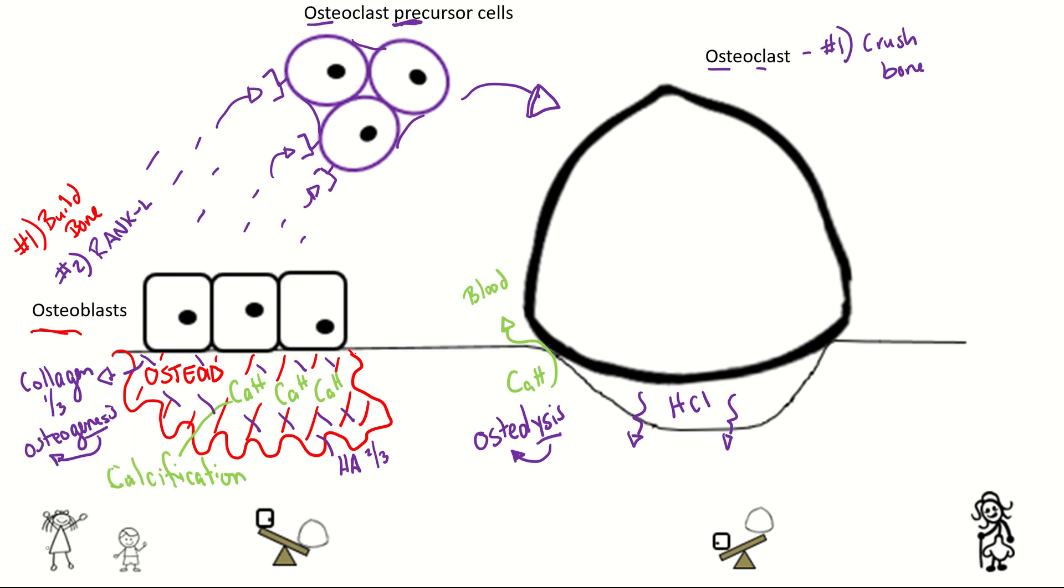But one thing that's interesting is why in the world would this osteoblast, who's supposed to be building bone, be creating these keys to create osteoclasts, its nemesis or the opposite kind of bone cell. And it's all about checks and balances.